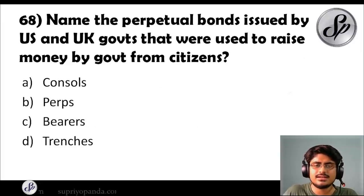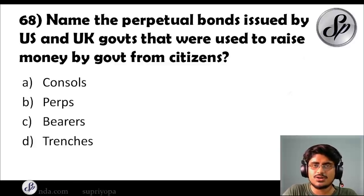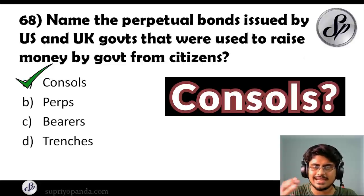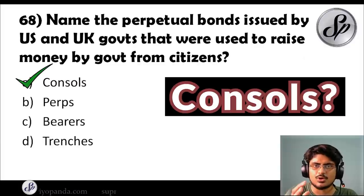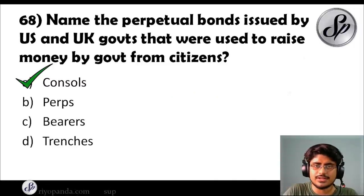Question sixty-eight: name the perpetual bonds issued by the US and UK governments that were used to raise money from citizens. These bonds are called consols. They are perpetual bonds — meaning they have no end date — but the government can pay them off. In wartime situations, these were used by these governments to raise money from citizens. They are all paid off now.